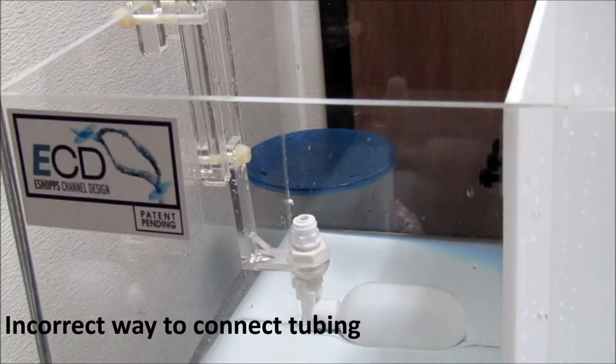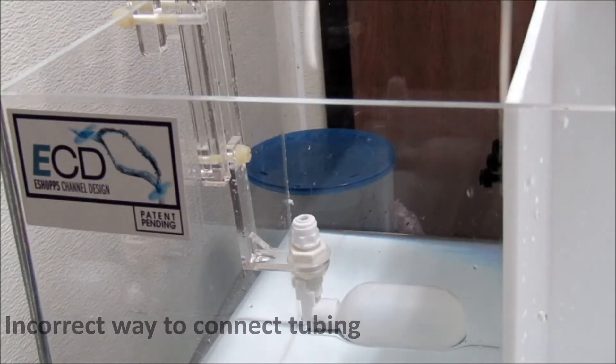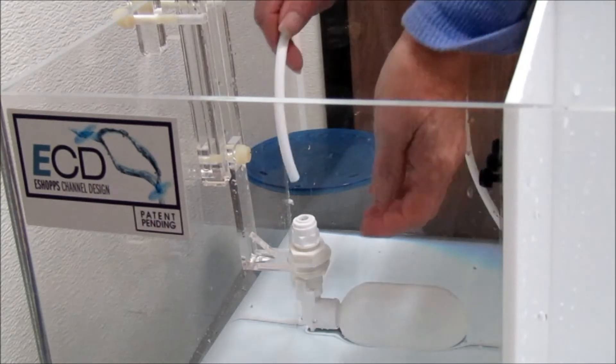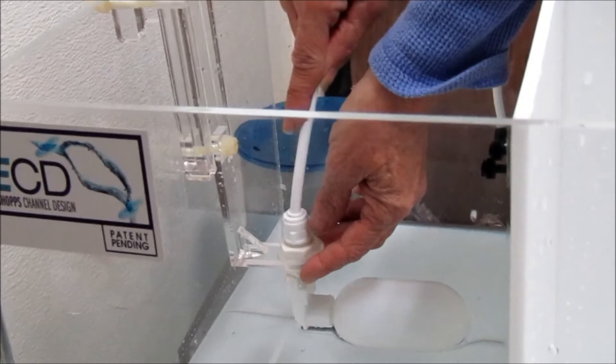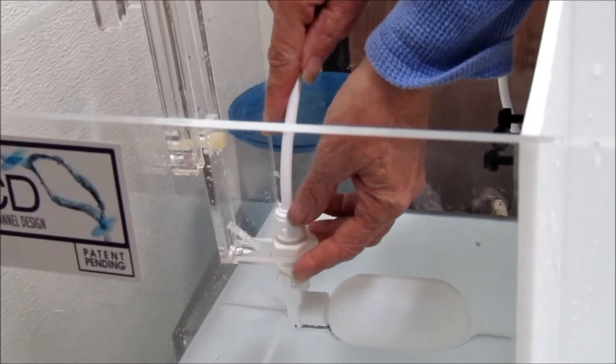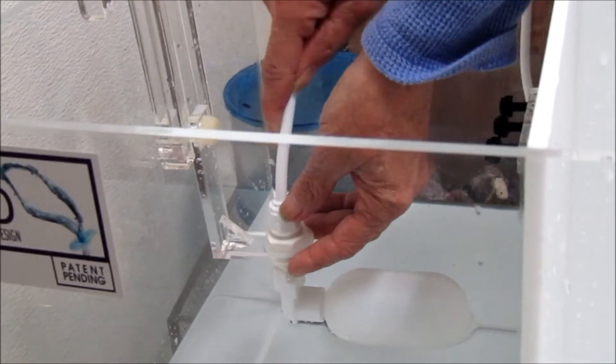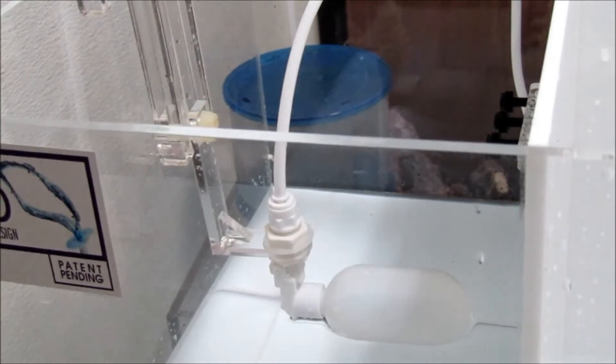This is again the proper way to set up the flow valve. When you insert the tube, if it just goes in and you don't push all the way and lock it in and you set it just right on top, like so,